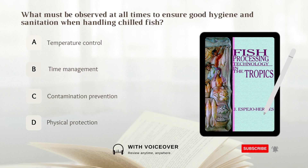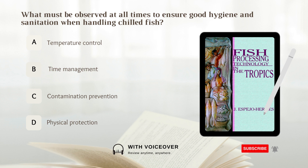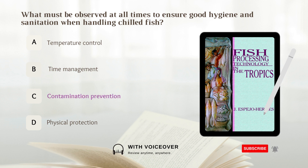What must be observed at all times to ensure good hygiene and sanitation when handling chilled fish? Options: A. Temperature control. B. Time management. C. Contamination prevention. D. Physical protection. Answer: C. Contamination prevention.